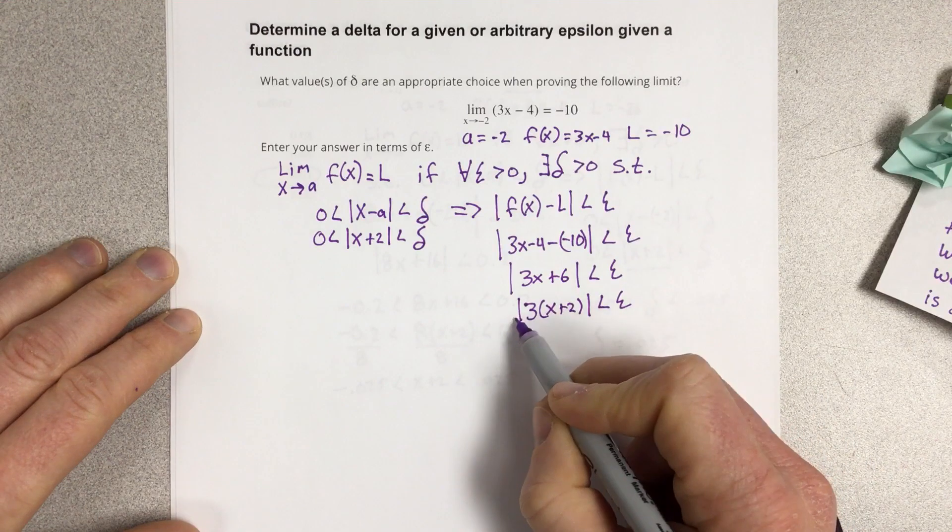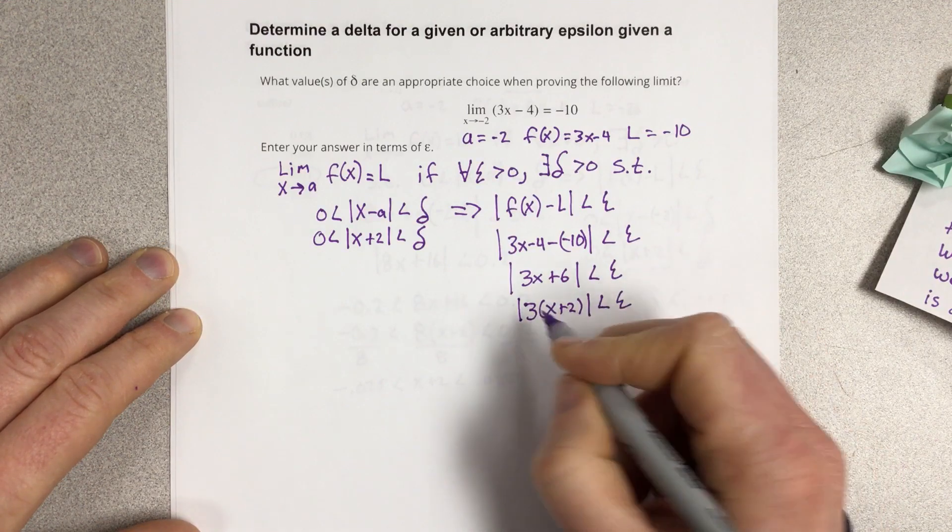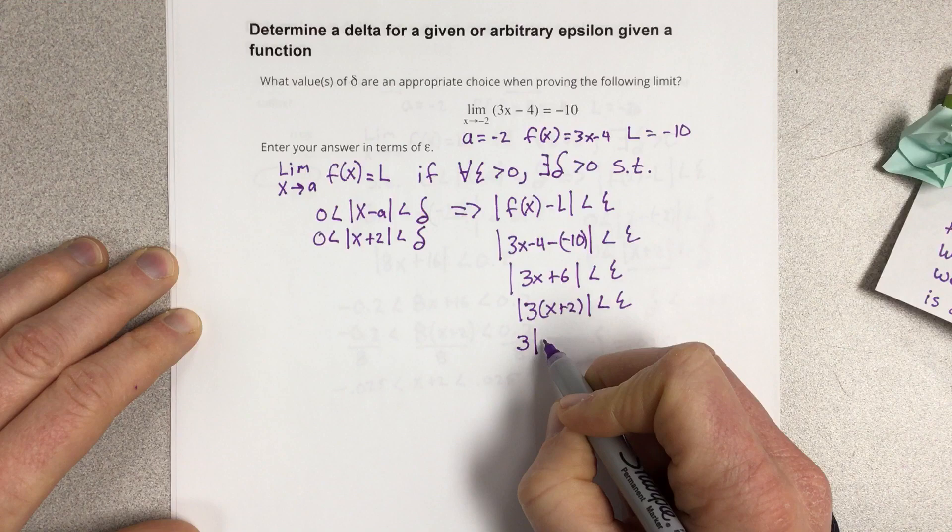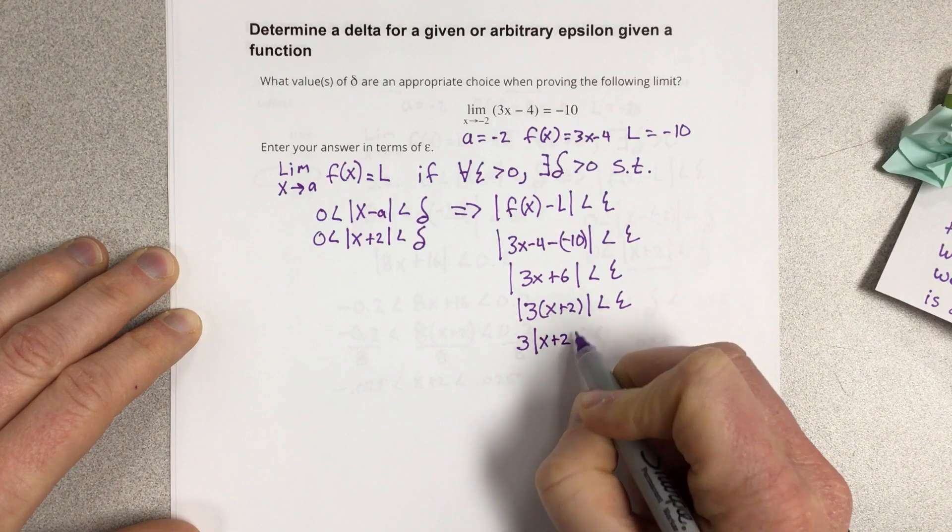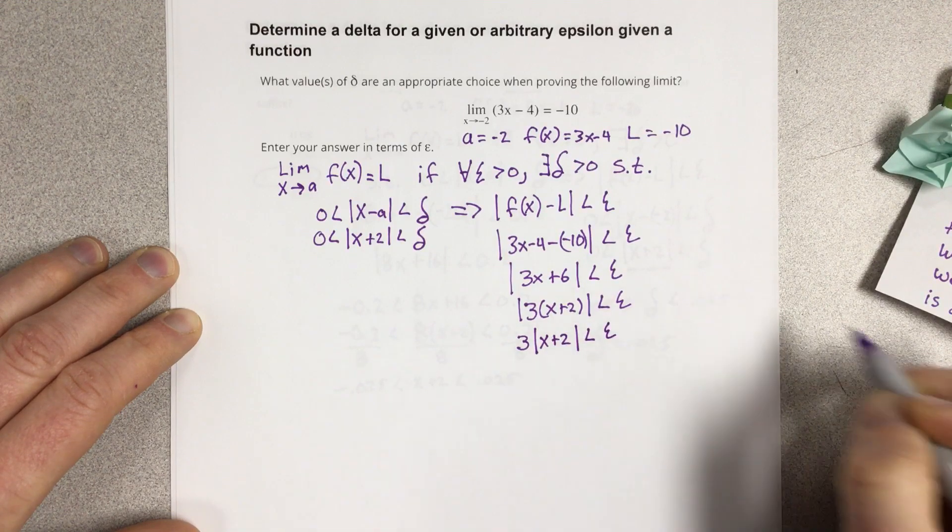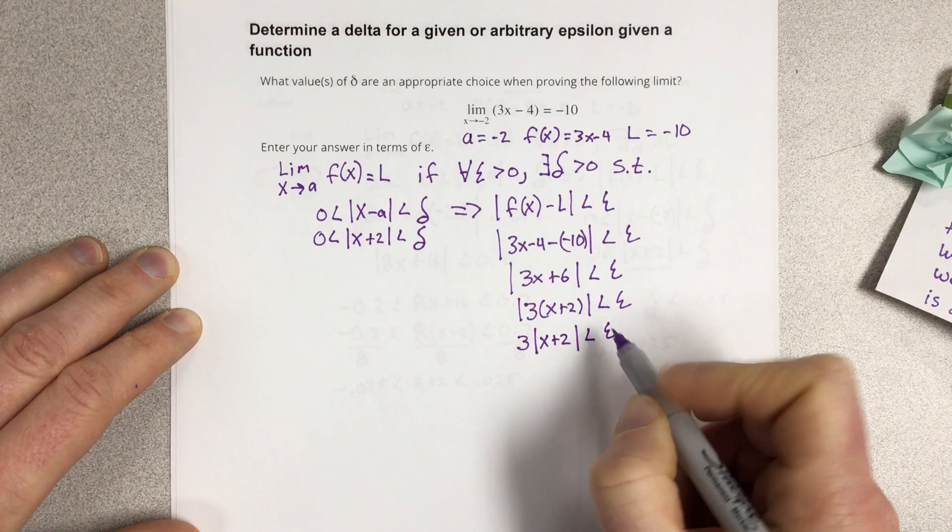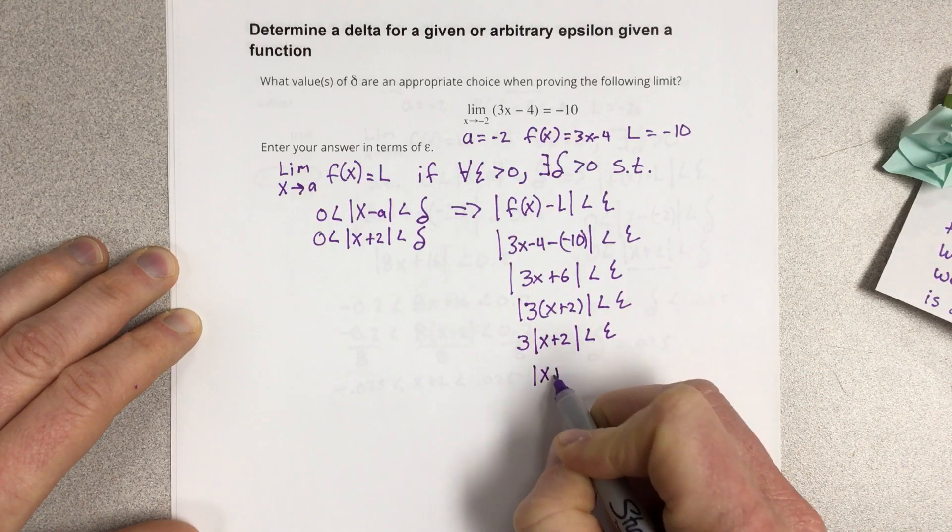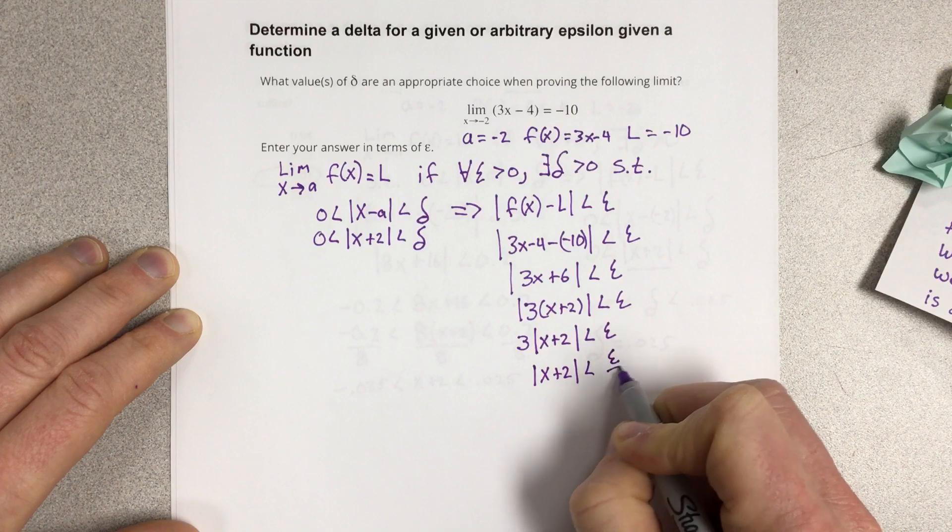When I bring a 3 outside of here, the absolute value of 3 is 3, so I can just write that outside, so that's 3 times absolute value of x plus 2 less than epsilon. And then I can divide by 3 on each side, and that tells me that the absolute value of x plus 2 is less than epsilon over 2.